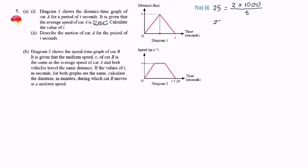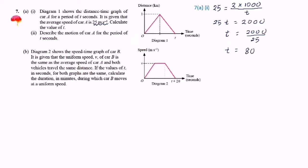So, 25T equals 2,000. Therefore, T equals 2,000 divided by 25, which gives T equals 80.